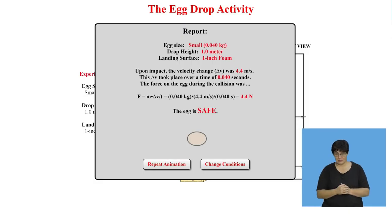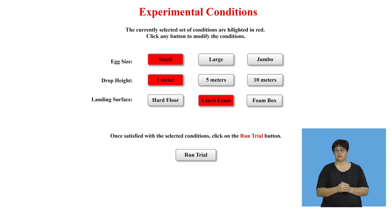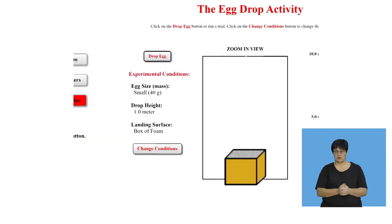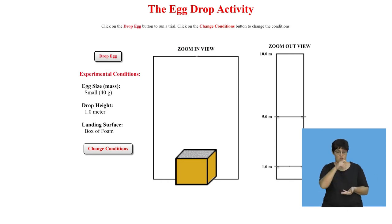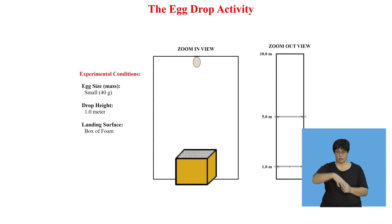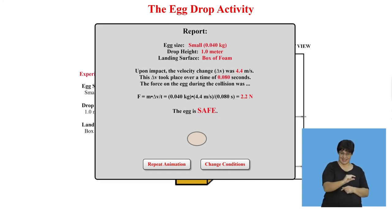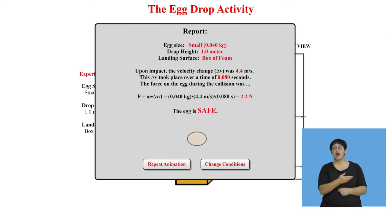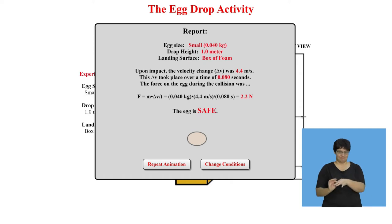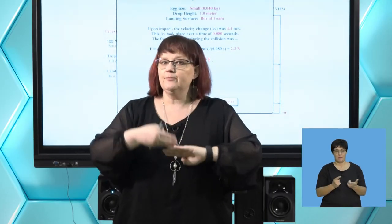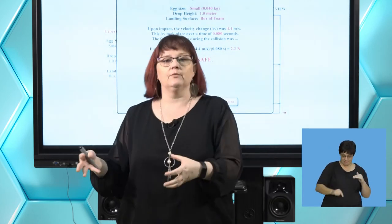Let's put the egg in a foam box. If this breaks, there's a problem. We drop the egg into the foam — absolutely safe. Look at the time: compared to the one-inch foam, that's double the time period. It now experiences half the force. So force and time are related — they are inversely proportional to each other because the change in momentum is the same.